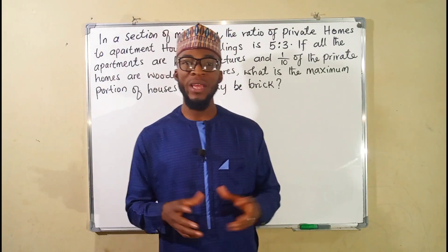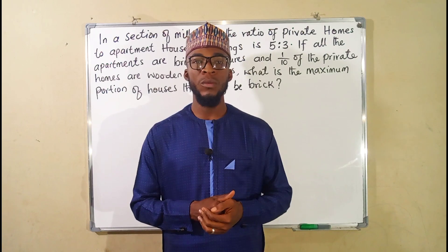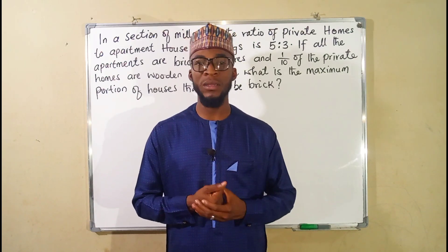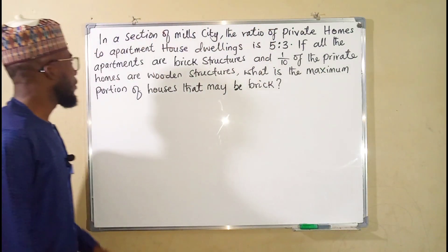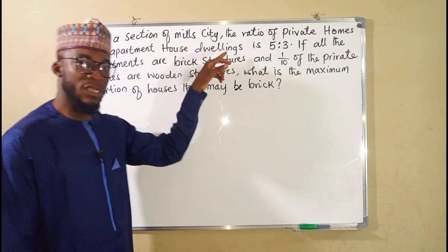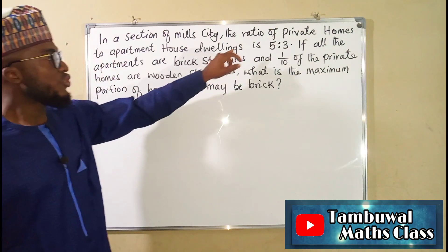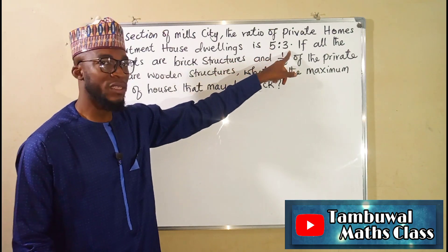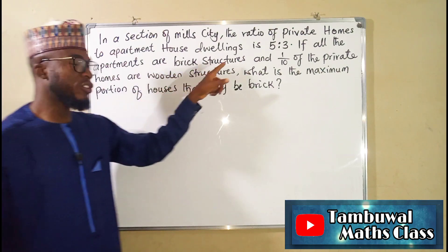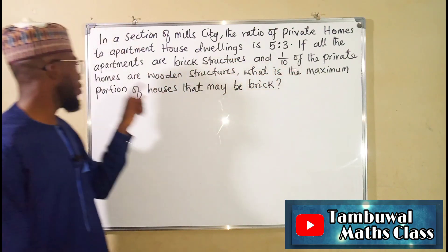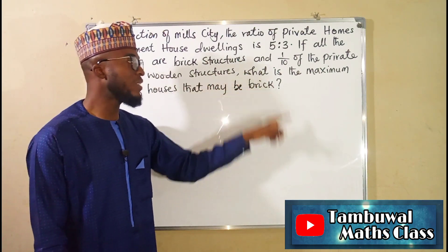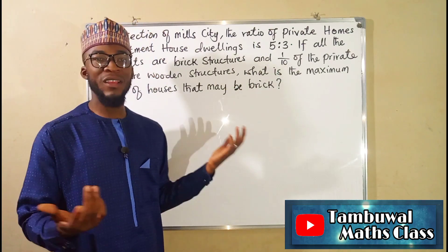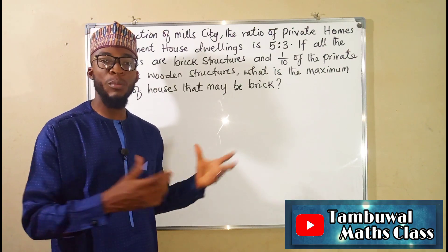Hello, good morning viewers. Today I have another word problem question which is very much related to sharing, and it is also a suggested question from my Facebook fan, Enamullah. The question reads: in a section of Milk City, the ratio of private homes to apartment house dwellings is five to thirty. If all the apartments are brick structures and one over ten of the private homes are wooden structures, what is the maximum portion of houses that may be brick?